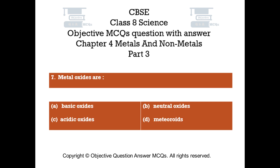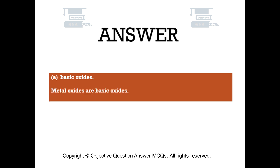Question number 7. Metal oxides are. Option A: basic oxides. Option B: neutral oxides. Option C: acidic oxides. Option D: meteoroids. The right answer is option A. Basic oxides. Metal oxides are basic oxides.